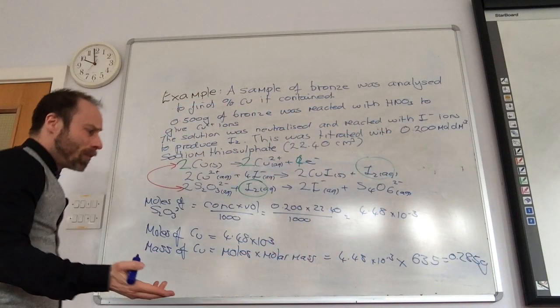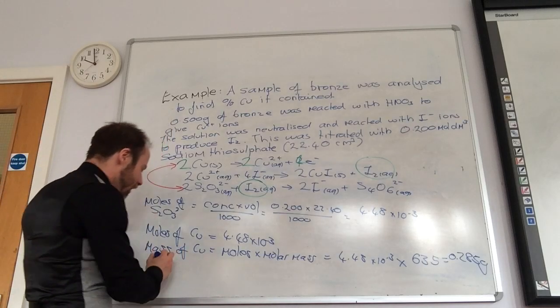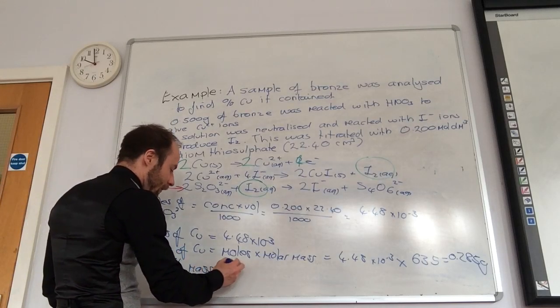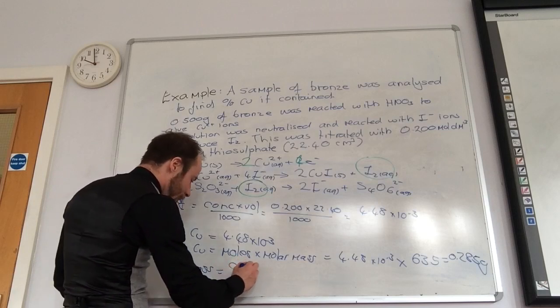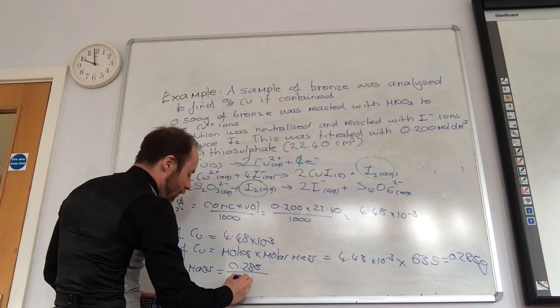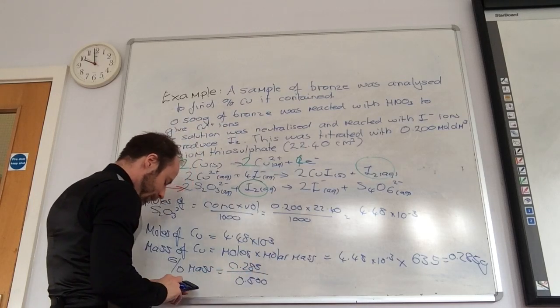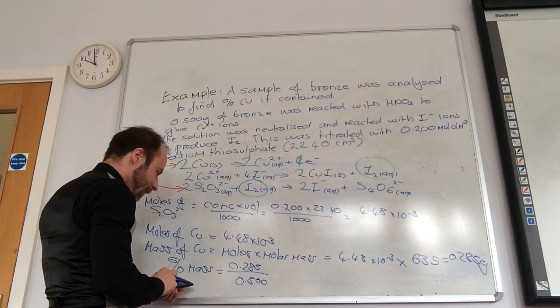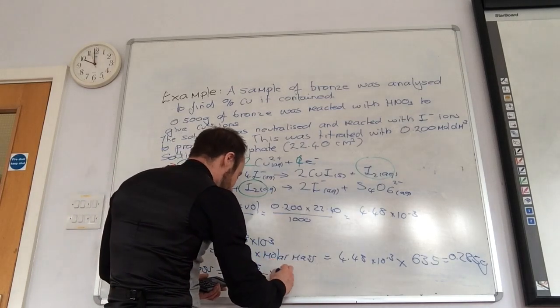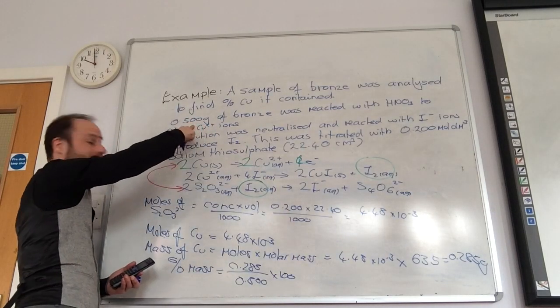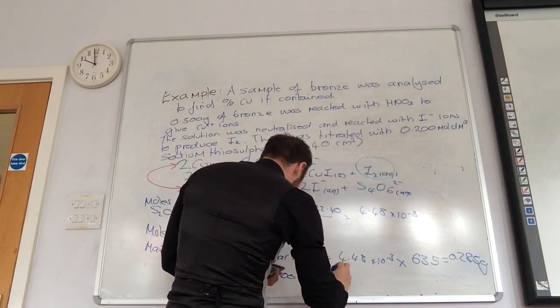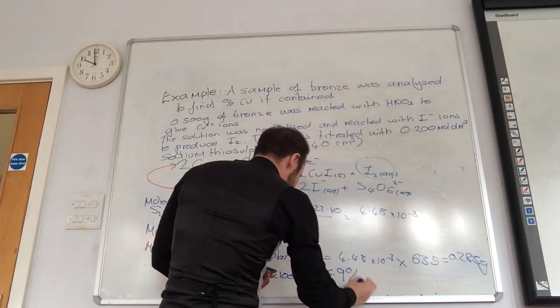So I know how much copper I've got. What I need to do is do my percentage. Percentage mass, 0.285, divided by my original sample, which was 0.500, times 100, and that gives me 56.9 percent.